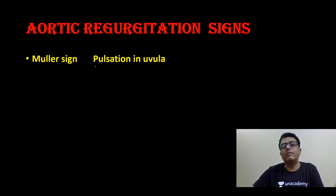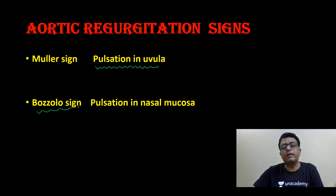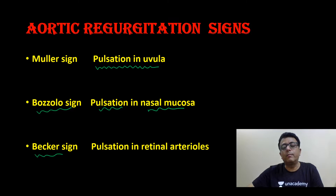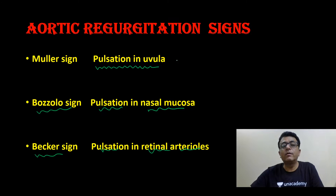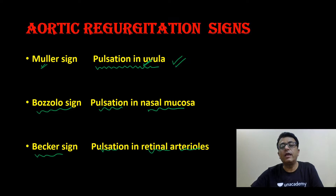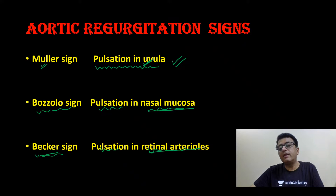Muller sign is pulsation in the uvula. Remember: Muller is spelled M-U, pulsation in uvula. Bozzolo sign is pulsation in the nasal mucosa. Baker sign is pulsation in the retinal arterioles.